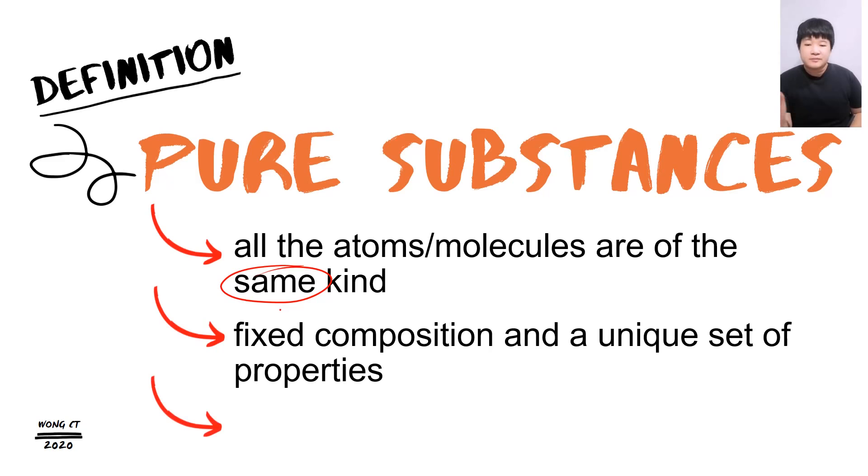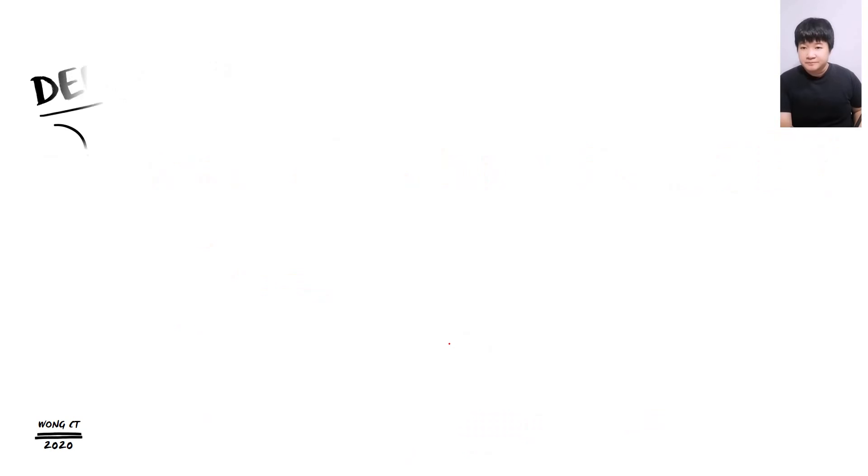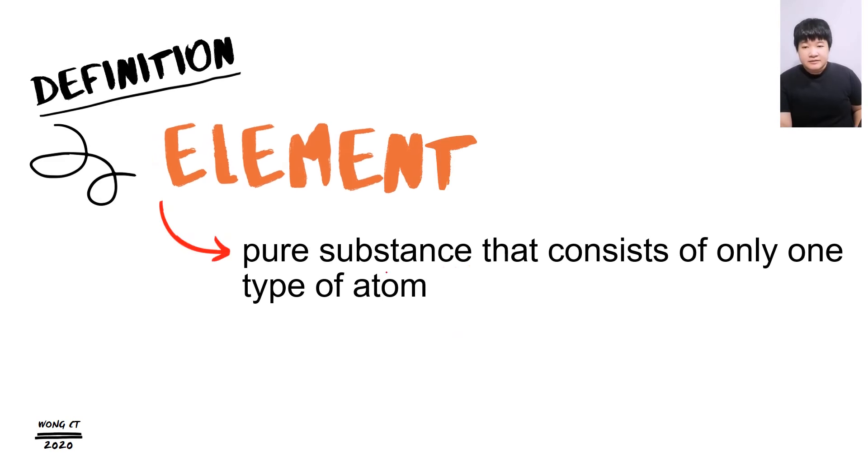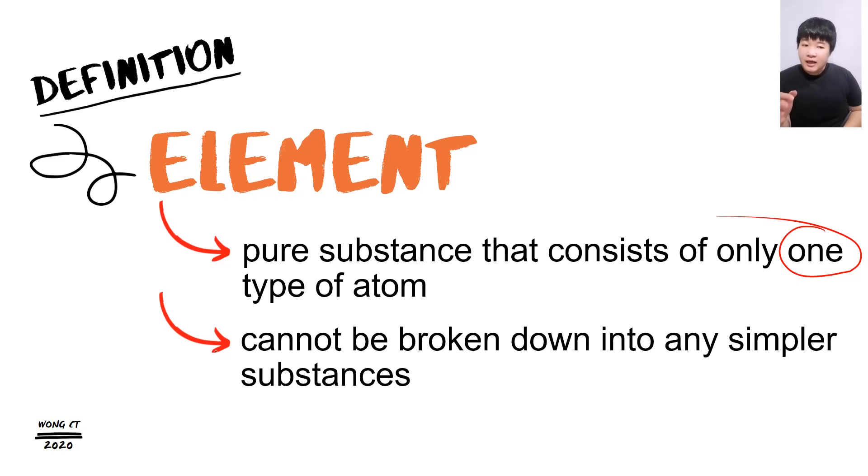And pure substance can be classified into element and compound. So let's look into element. Element is a pure substance that consists of only one type of atom. The keyword over here is one type of atom. Element cannot be broken down into any simpler substance. In other words, elements are the simplest substance.